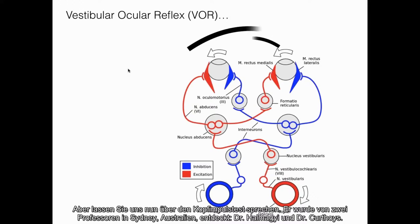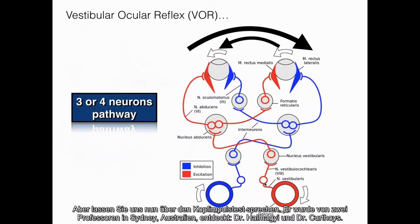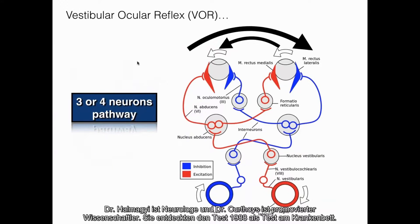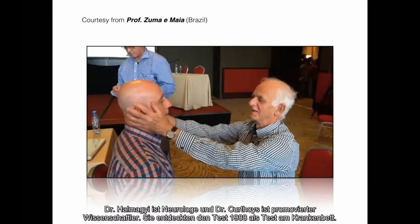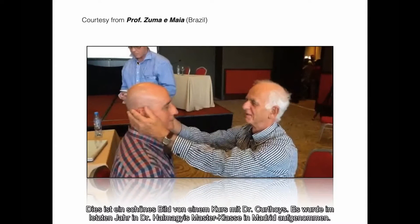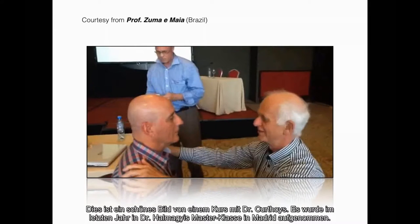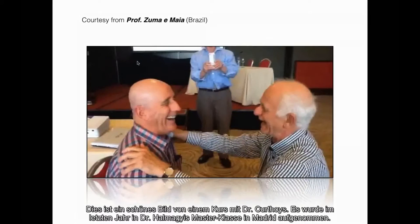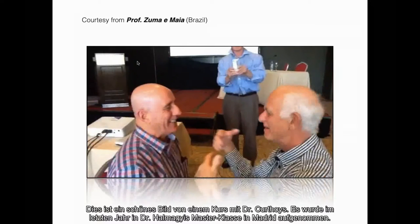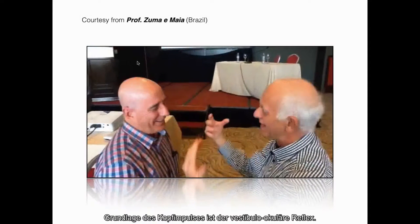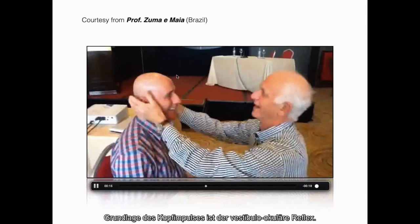The Head Impulse Test was first described by two professors in Sydney, Australia — Dr. Halmagyi, a neurologist, and Dr. Curthoys, a PhD scientist. They described it in 1988 as a bedside test. There's a picture from one of my colleagues in Brazil with Dr. Curthoys, taken last year at Autometrics' master class in Madrid. The basis of the Head Impulse Test is the vestibulo-ocular reflex.